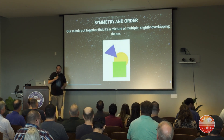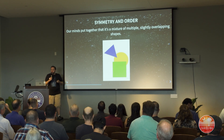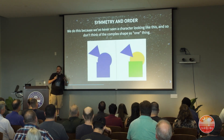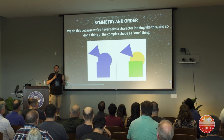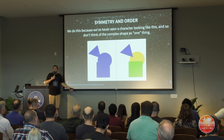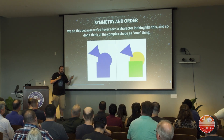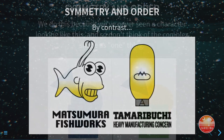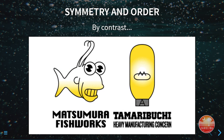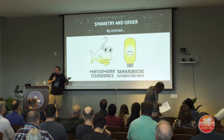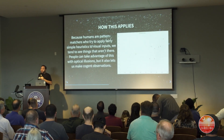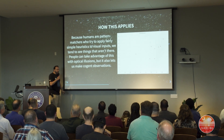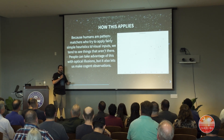We put together that it's multiple slightly overlapping shapes. We do this because we've never seen that combined shape in the wild. Now if you do see it — if it is actually a cartoon character — you say, oh well, this is the cartoon character, leading to one of my favorite episodes of The Simpsons, where Matsumura Fishworks combined with Tamuribuchi Heavy Manufacturing Concern to create Fish Bulb, which looks suspiciously like Homer.